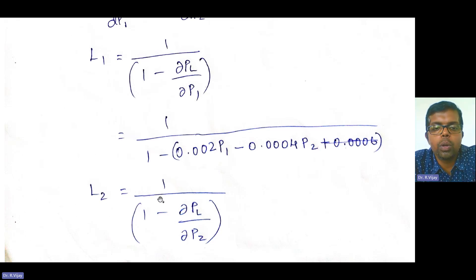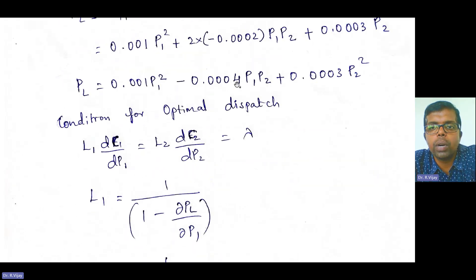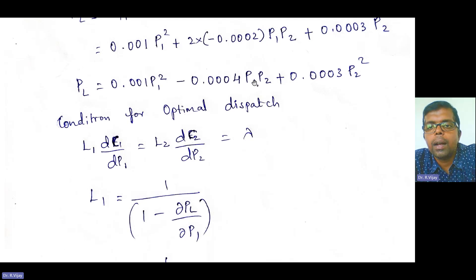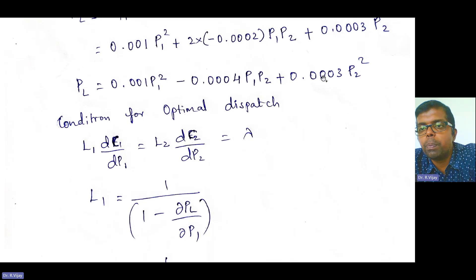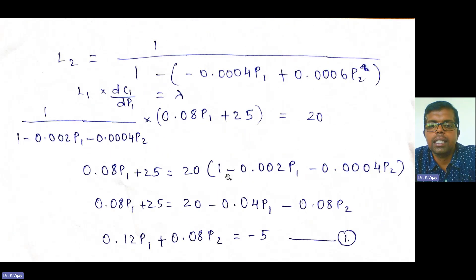Similarly, L2 = 1 divided by (1 minus ∂PL/∂P2). Differentiating PL with respect to P2 gives: ∂PL/∂P2 = minus 0.0004 P1 plus 0.006 P2. This gives us the penalty factor L2.